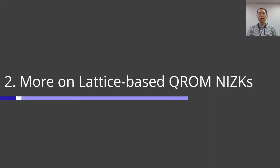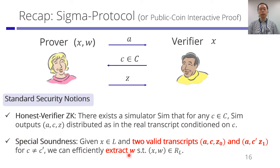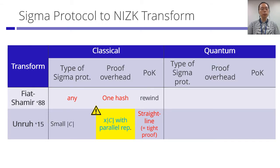Let me explain a bit more about lattice-based QROM NIZKs and how we construct them. All the NIZKs in this work start from a sigma protocol, or more generally, a public-coin interactive proof system. For sigma protocols, it's standard to define honest-verifier zero-knowledge and special soundness, where special soundness states that given two valid transcripts with the same first message A, there is an efficient way to extract a witness W.